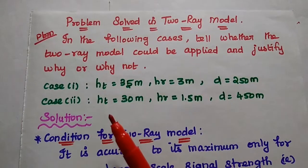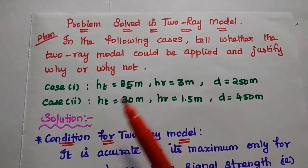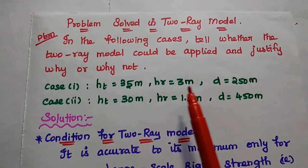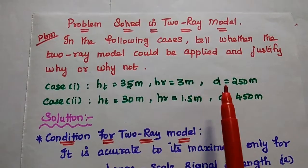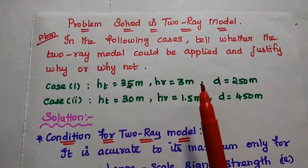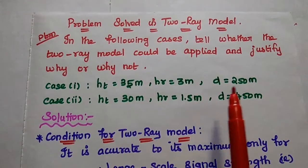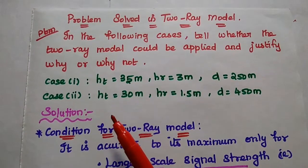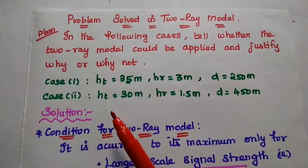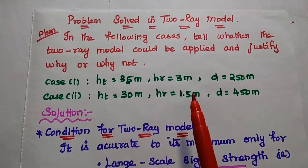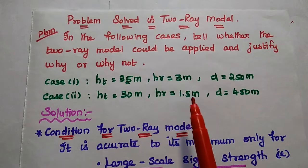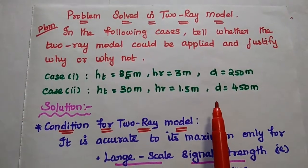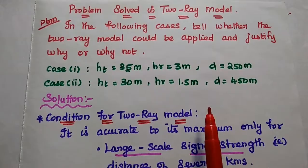In the first case, the height of the transmitter is 35 meters, the height of the receiver is 3 meters, and the distance between the transmitter and receiver is 250 meters. In the second case, the height of the transmitter is 30 meters, the receiver is 1.5 meters, and the distance is 450 meters.